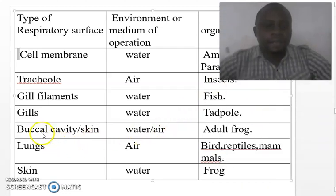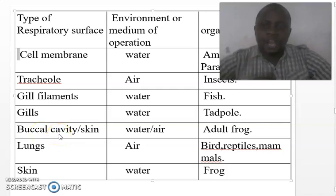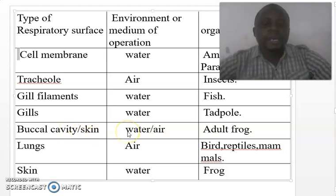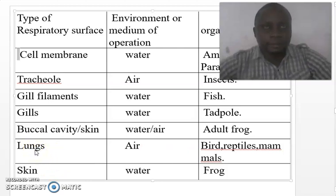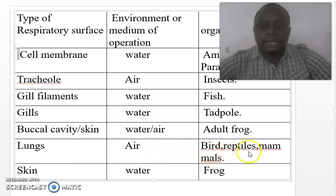We can also have the buccal cavity — the mouth cavity — as in the adult frog, where gaseous exchange occurs through the mouth cavity. Also, the skin: these organisms operate in both water and air, so they can extract oxygen from water and air; examples are adult frogs. Another type of respiratory surface is the lungs, which extract oxygen from air. Examples of organisms with lungs include birds, reptiles, and mammals. The skin is also used by frogs when they live in water.